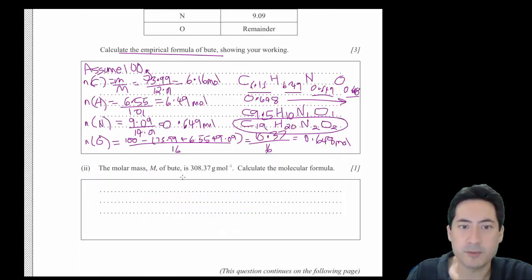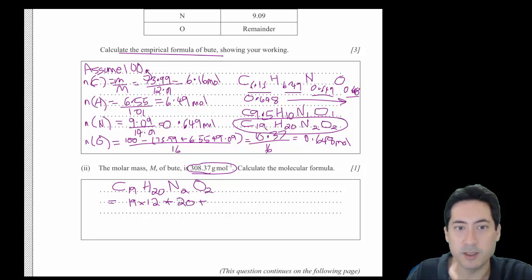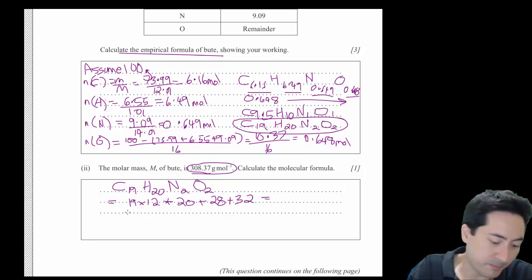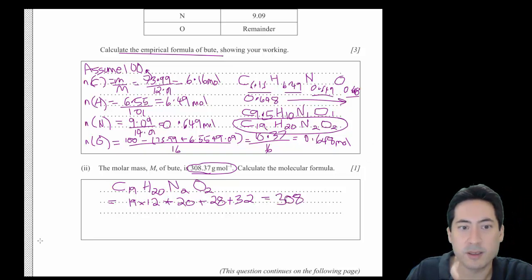Now the molar mass of Butte is actually 308.37. Let's find out what the molar mass of the empirical formula is. That's going to be 19 times 12, plus hydrogen is 20 times 1, so 20, nitrogen is about 14, so 28, and oxygen is 16, so 32. We add those up, and that gives us 308. So therefore the empirical formula equals the molecular formula.